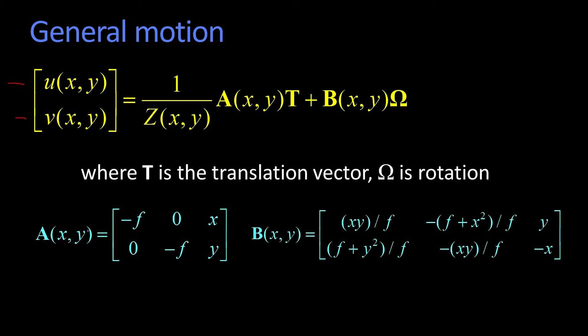What it does is, this formula relates the translation and rotational component of the point out there in the world—these are world T and world omega—to how it's moving in the image.